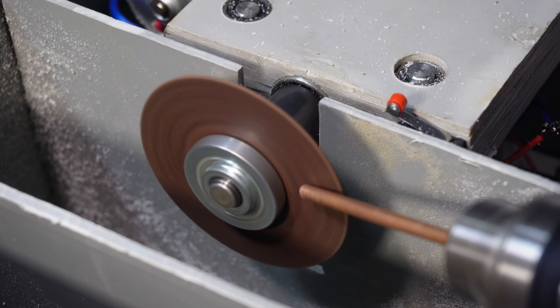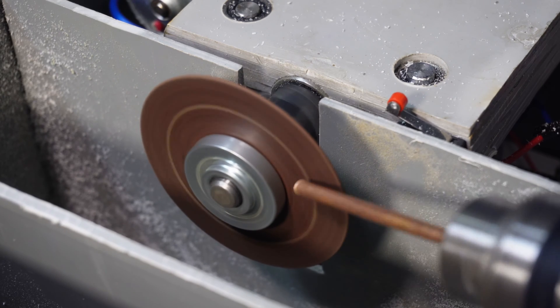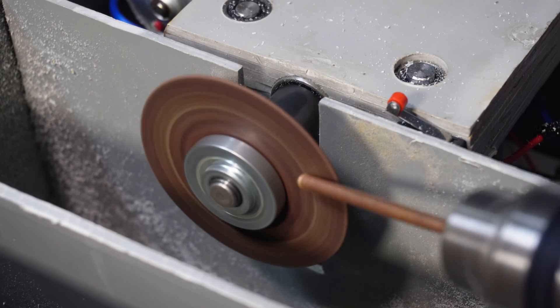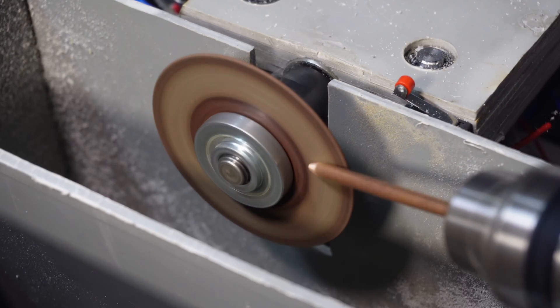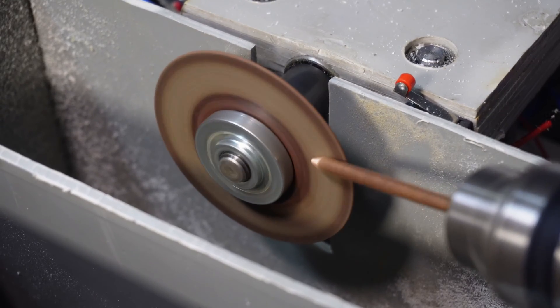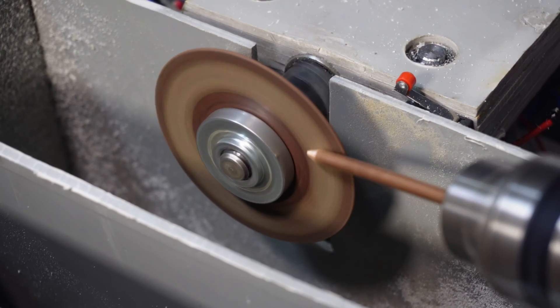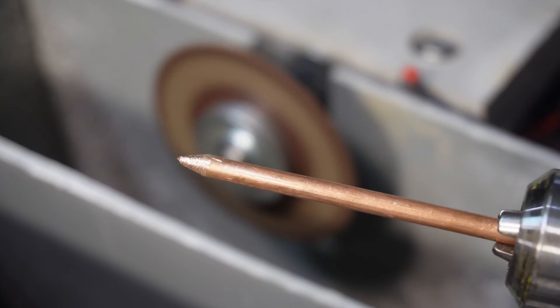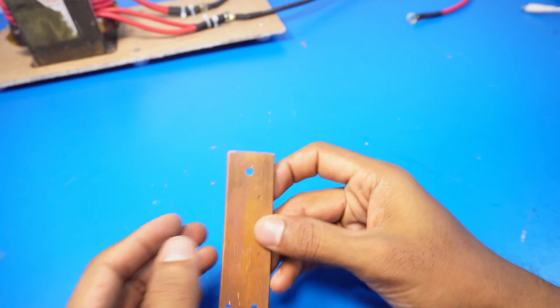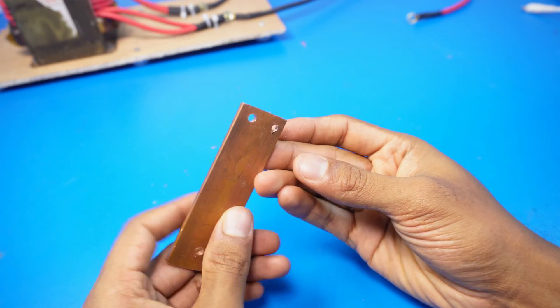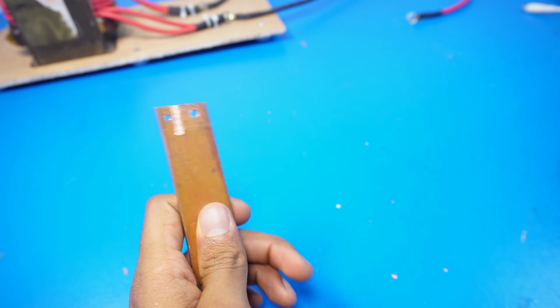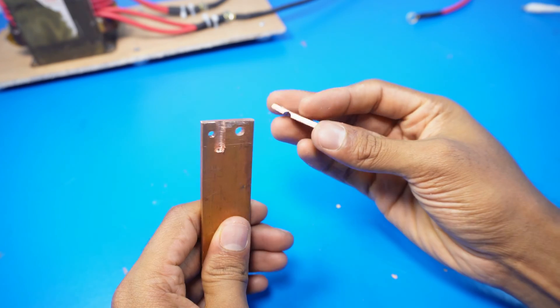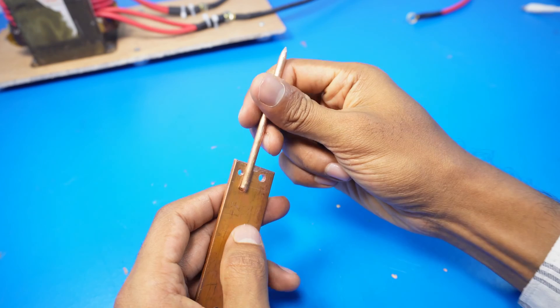I sharpen the ends of these copper rods so they can be used for spot welding. Here's the copper strip that I drilled holes into. I apologize for losing the footage of this step, but you can see the final result. And then I fix the copper rods to the copper strip.